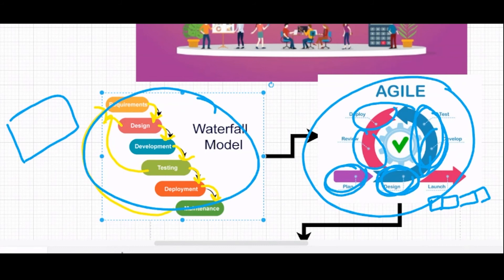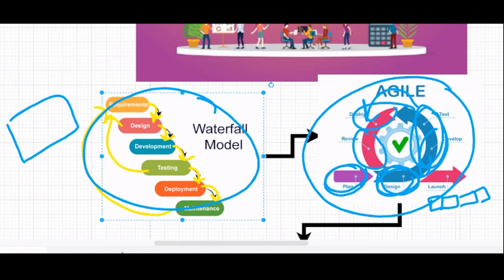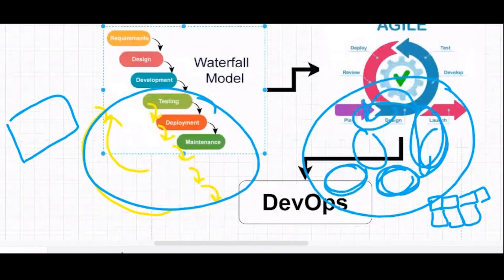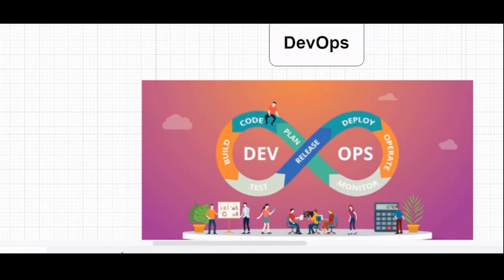Agile also didn't provide automation — developers still had to manually pass the product to the testing phase. This is why when you hear someone say 'work in an agile way,' they mean working in a block-by-block manner. The limitations of agile led to the development of DevOps, which introduced automation as its main contribution. Other aspects were already present in agile, but tools like Jenkins and Travis CI made the process automated and faster.